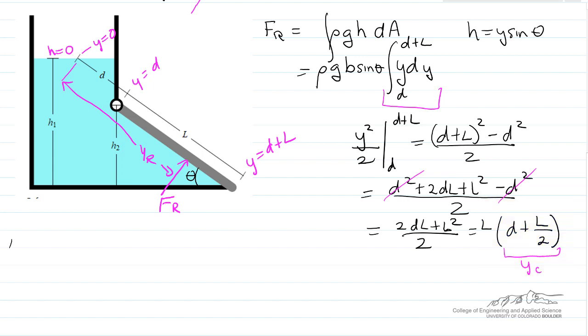This is the center, location of the center of the gate, d down and then half of the length to the gate, and this is the location where the weight would be exerted that tends to keep the gate closed.